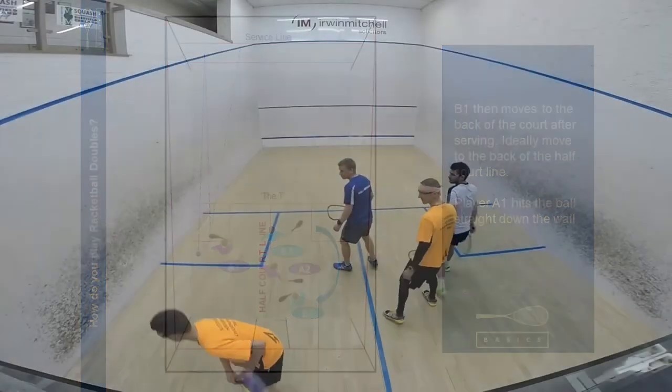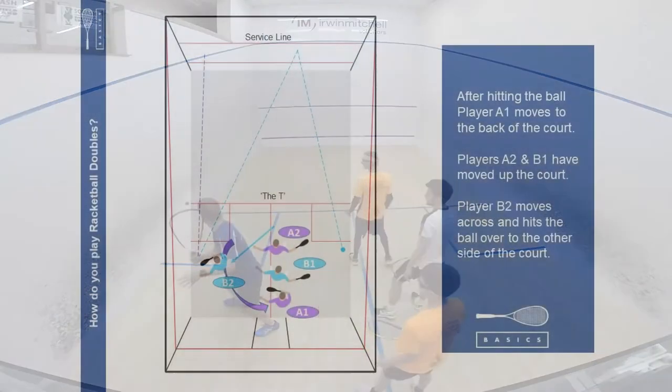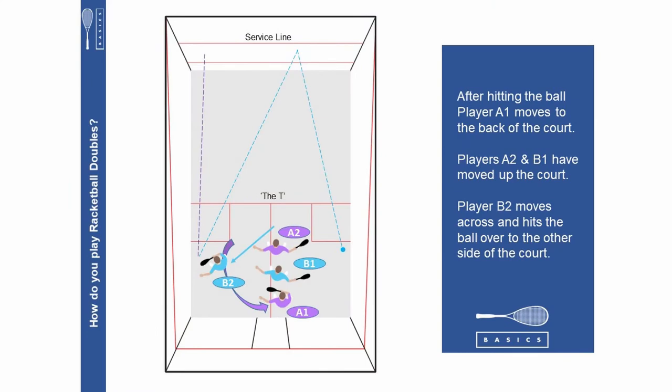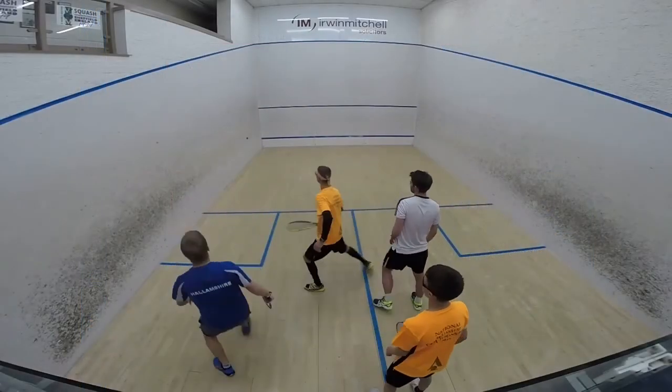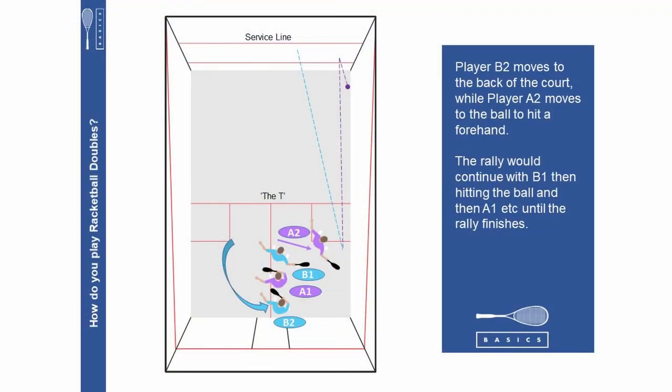Players A2 and B1 have moved up the court. Player B2 moves across and hits the ball over to the other side of the court. Player B2 moves to the back of the court while player A2 moves to the ball to hit a forehand. The rally would continue with B1 then hitting the ball and then A1 etc until the rally finishes.